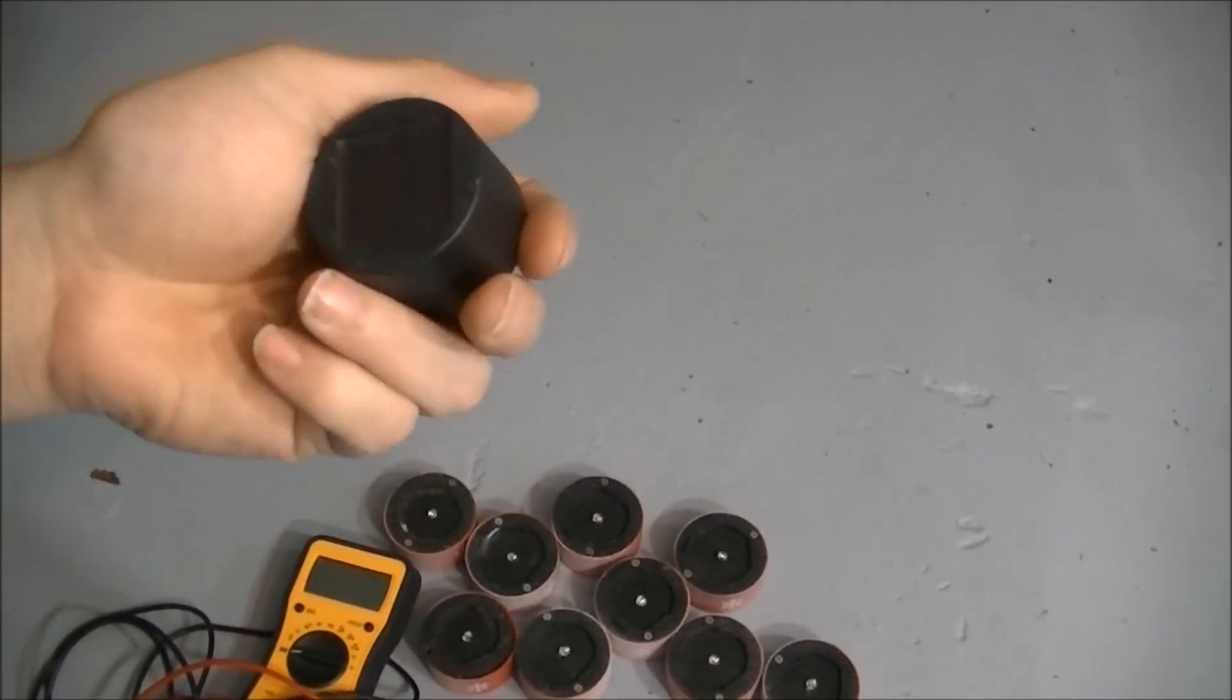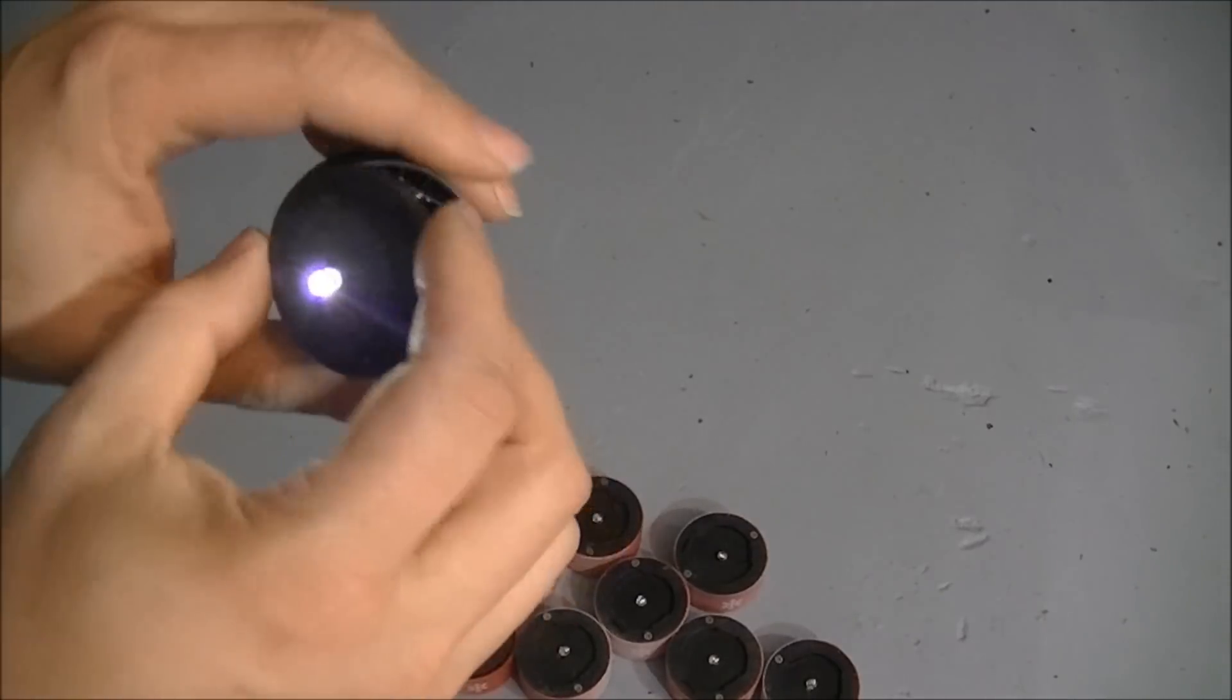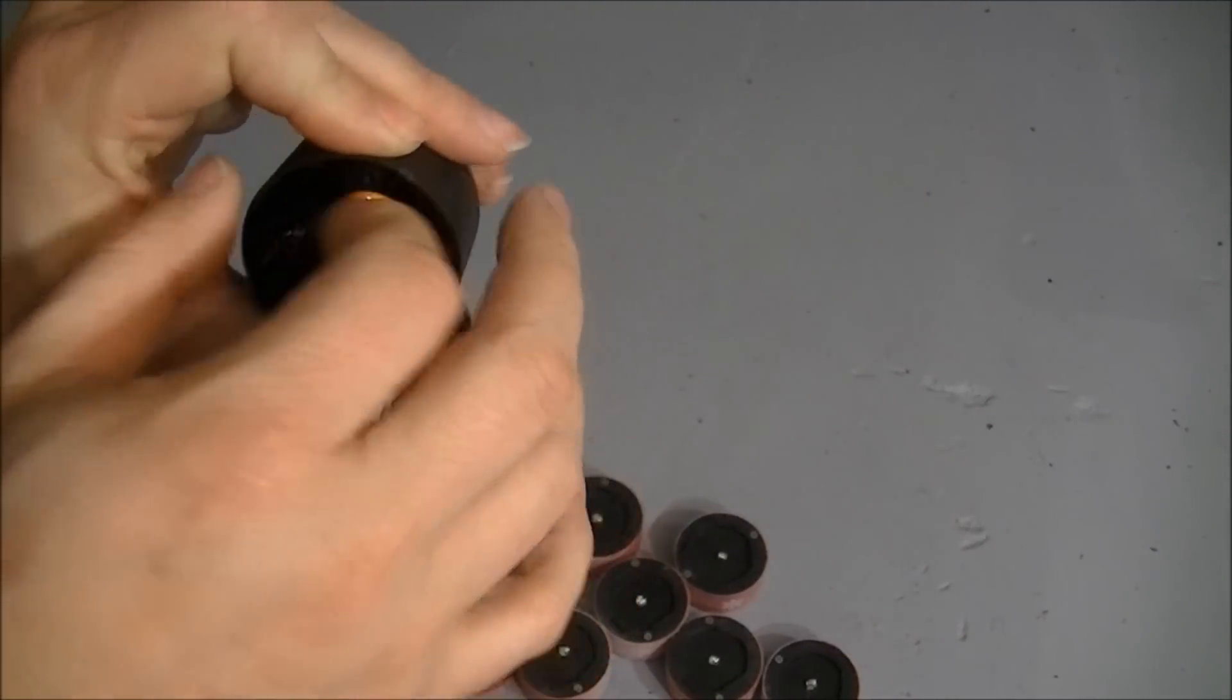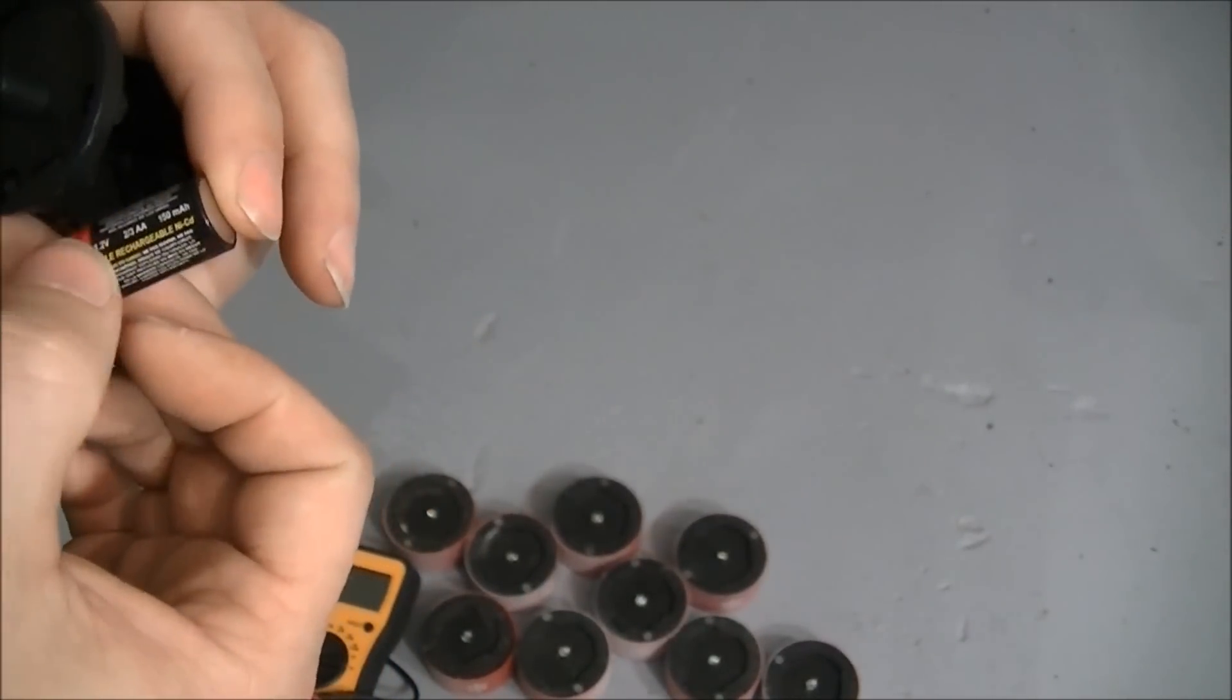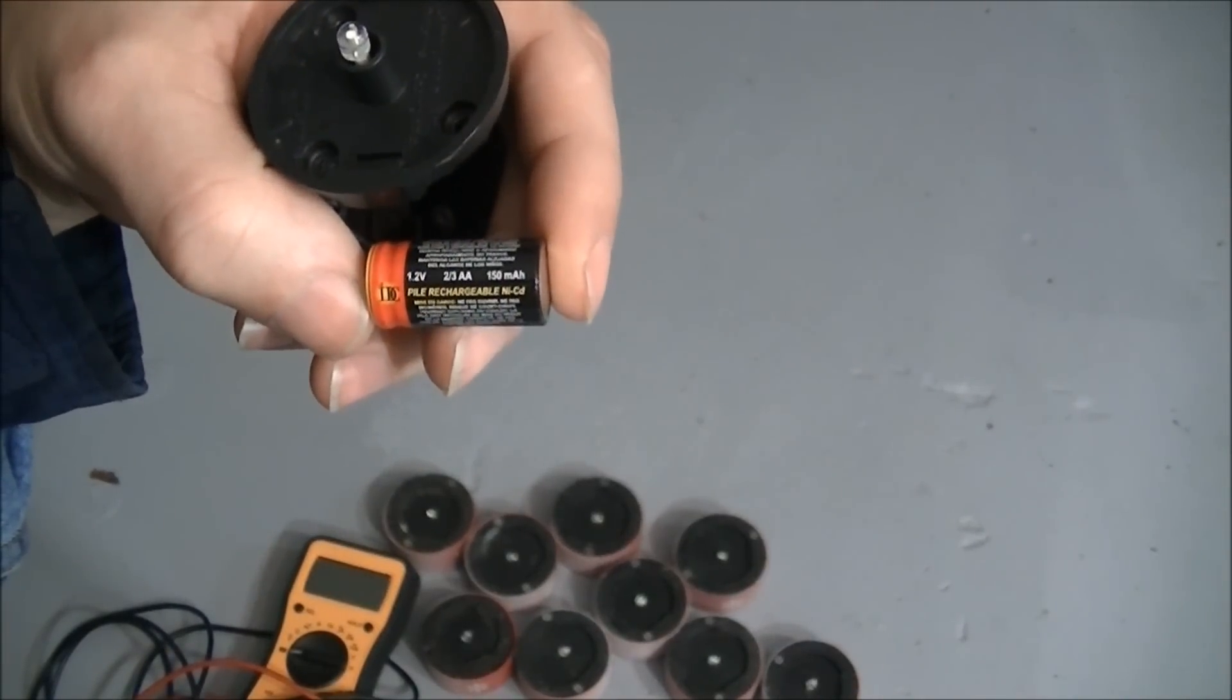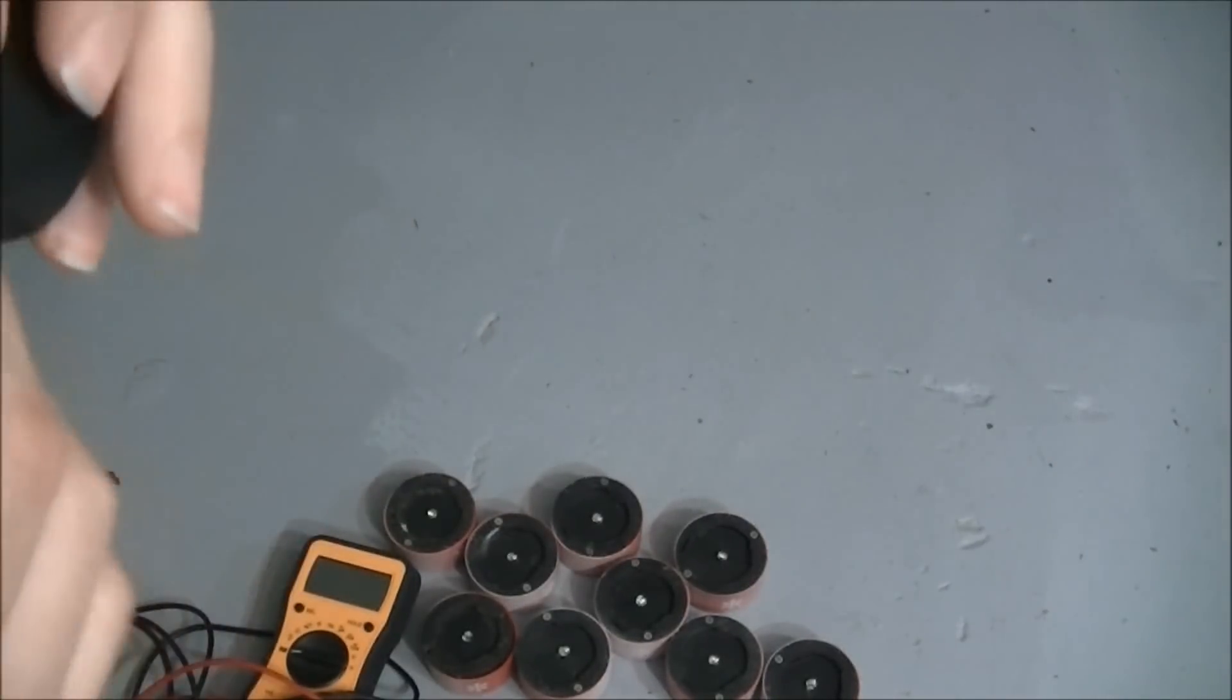What I have here is some outdoor solar lights. I've taken a brand new one here and examined what kind of battery they used. I found out it is a two-thirds AA, only 150 milliamp hour, 1.2 volt rechargeable battery.